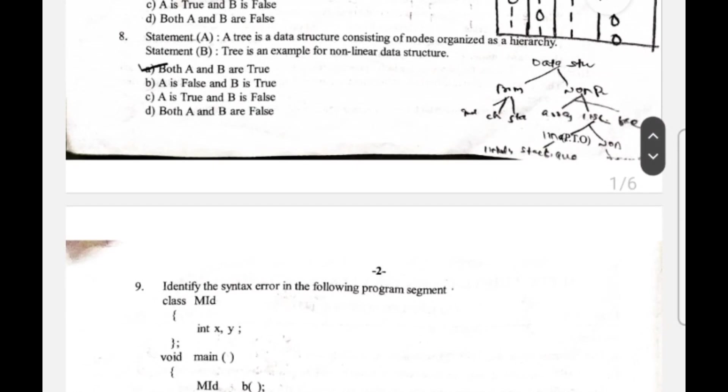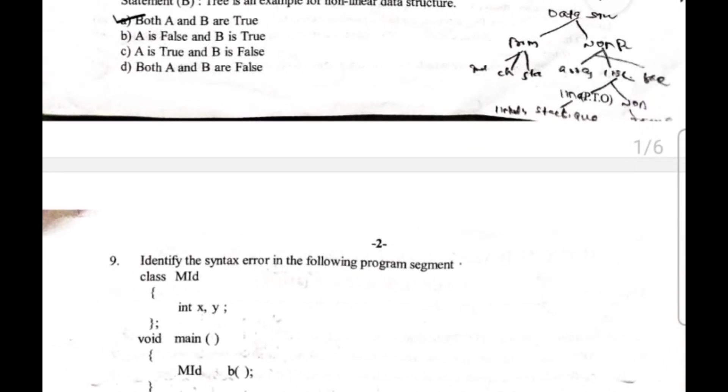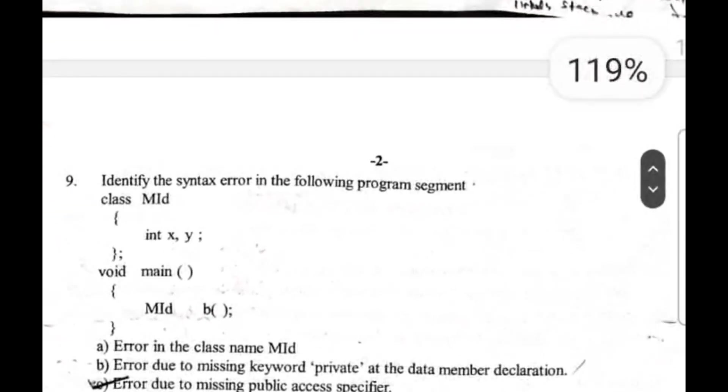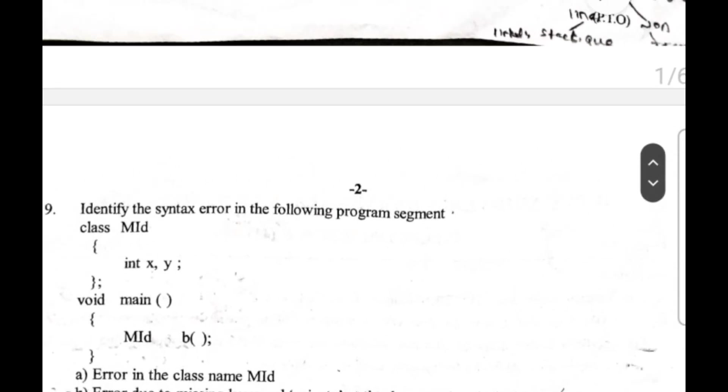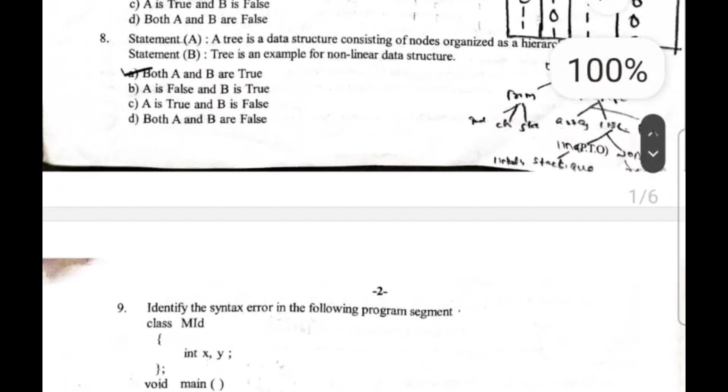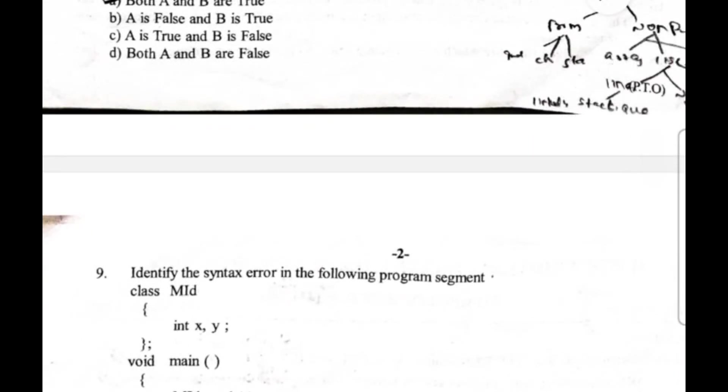Ninth question: identify the syntax error in the following program segment, class Mid. The correct answer is option C, error due to missing public access specifier. Why? Because in C++ without specifying an access specifier, class members will be private by default. To access class members from outside such as in the main function, they should be explicitly marked as public.